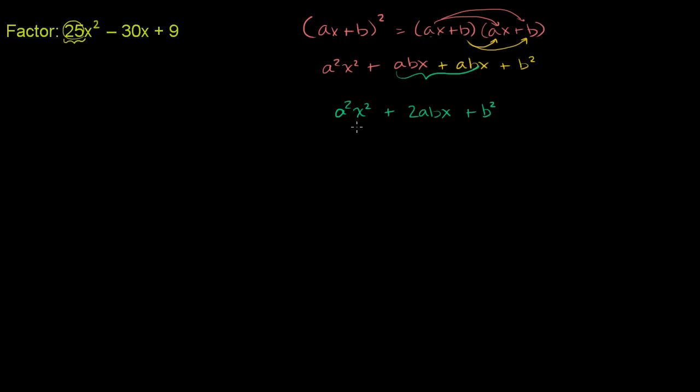Now, this pattern seems to work out pretty good. Let me rewrite our problem right below it. We have 25x squared minus 30x plus 9.